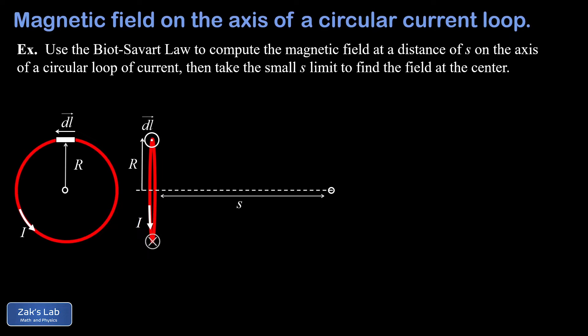In this video we're computing the magnetic field on the axis of a circular loop of current, where the current is I and the radius of the loop is big R. On the left we have a face-on view of the loop showing a small increment of length called dl vector, where the direction of dl is the direction of current in the loop.